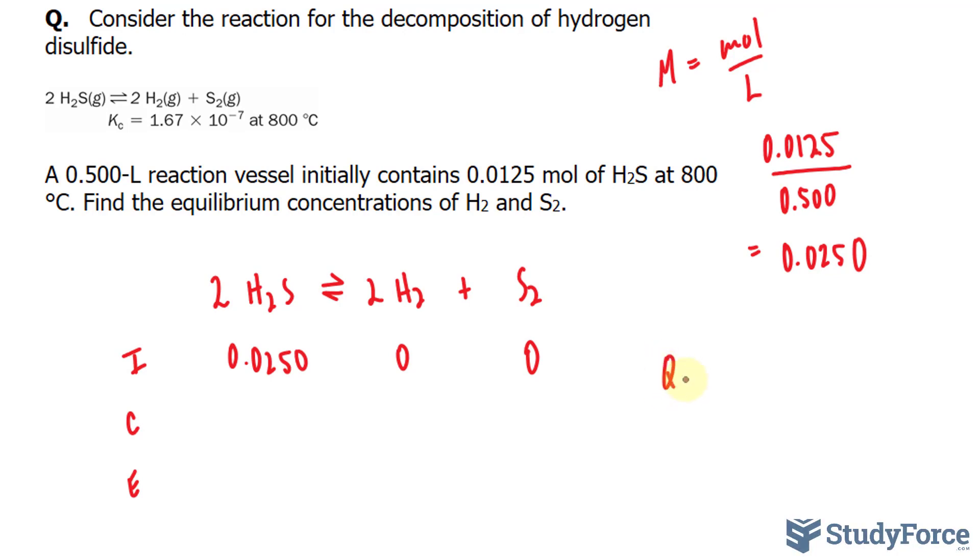QC is equal to the concentration of this product, which is 0, raised to the power of 2, times the concentration of this product, raised to the power of 1, over the concentration of our only reactant. And we have a number 0 divided by 0.025, which gives us 0.